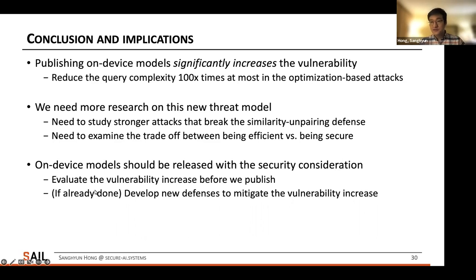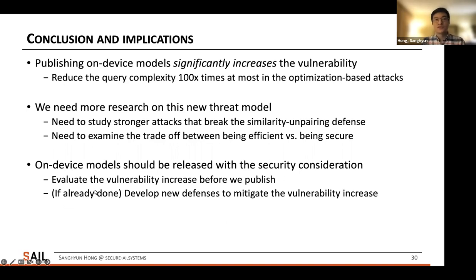To conclude, publishing on-device models can significantly increase vulnerability — reducing query complexity by up to 100 times in optimization-based attacks. This means we need more research on this new threat model: studying stronger attacks that break the Similarity Unpairing defense, and examining the trade-off between efficiency and security. Finally, on-device models should be released with security consideration: evaluate vulnerability increase before publishing, and if models are already released, develop new defenses to mitigate the vulnerability increase.